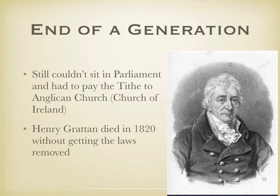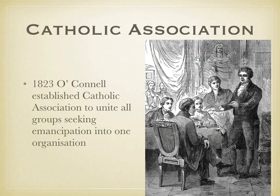So the job would fall to a successful lawyer named Daniel O'Connell. In 1823, O'Connell, a Catholic himself who had been campaigning for Catholic emancipation, decided to make one more effort to break the government's resistance to granting Catholic emancipation. He established the Catholic Association, which was set up explicitly to try to unite all the different groups seeking emancipation into one organized organization.